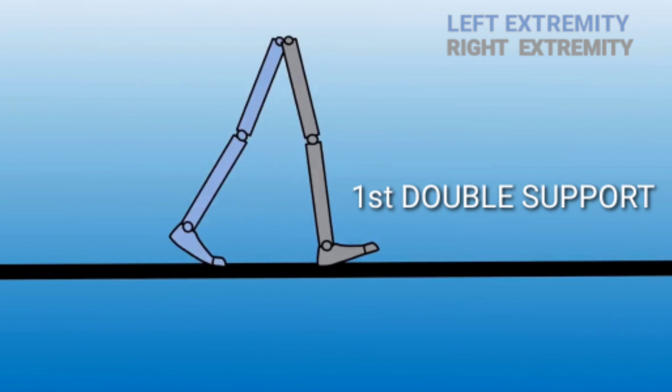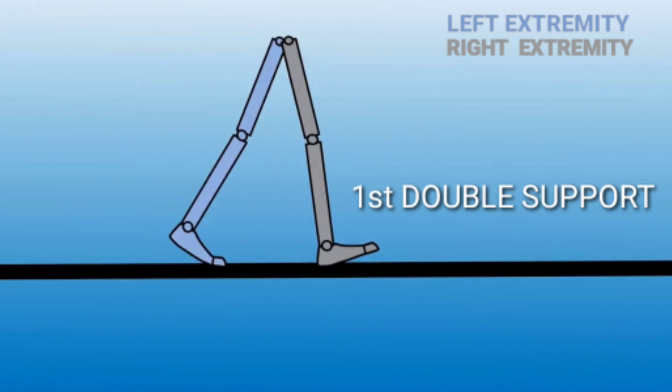When we are performing our gait, there comes a time when both extremities are in contact with the ground — this is called double support. Double support occurs two times in a gait cycle: once when our right extremity is the leading extremity, and a second time when our left extremity is the leading extremity. Each double support comprises about 11 percent of the gait cycle, so in total they consist of 22 percent.